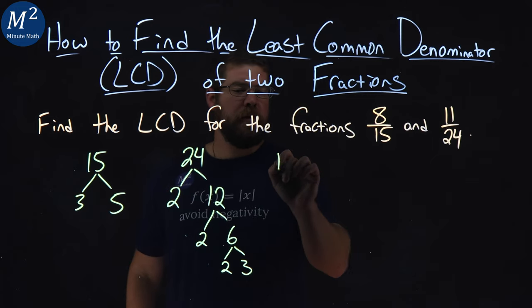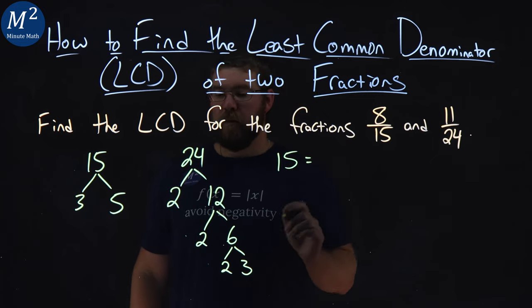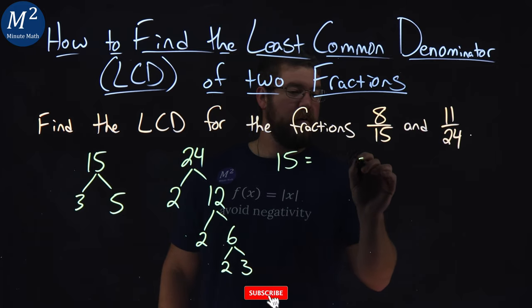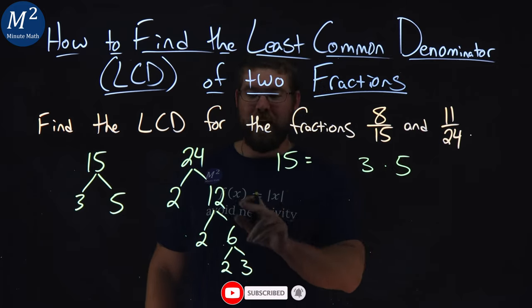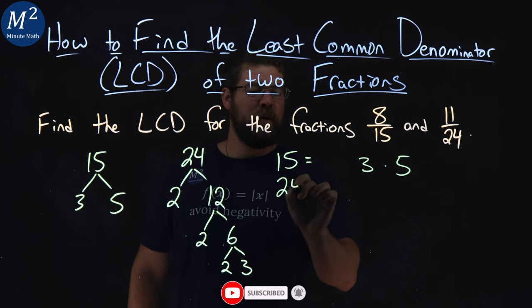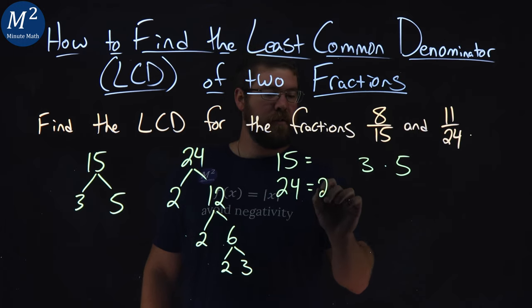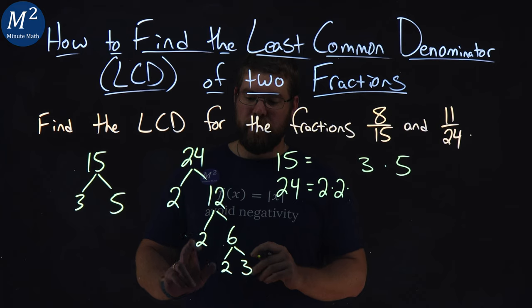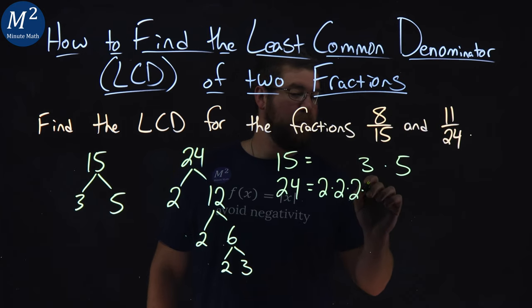So let's go write it out. Fifteen is equal to a three times a five. I'm setting it up for lining up the twenty-four. Twenty-four is equal to a two times two times two, three twos times three.